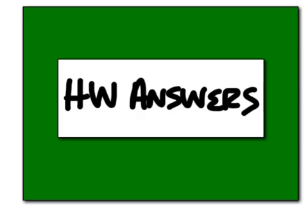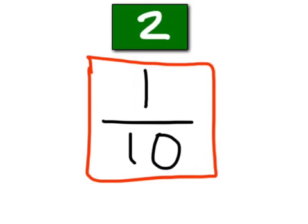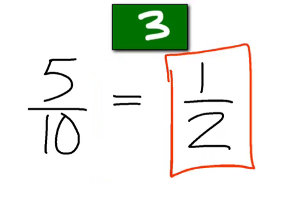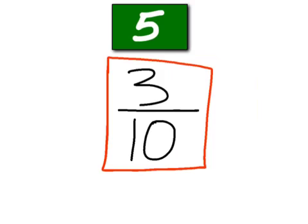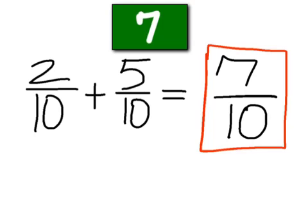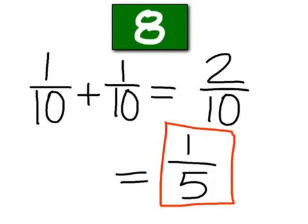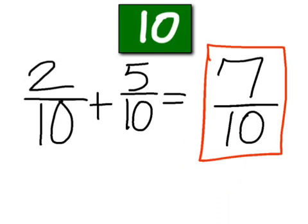Homework check will be up here. Go ahead and bring it up. Make sure you keep track of how many you have right. Number one should be 1 half. 2 should be 1 tenth. 3 should be 1 half. 4 should be 1 half. 5 should be 3 tenths. 6 should be 3 fifths. 7 should be 7 tenths. 8 should be 1 fifth. 9 should be 4 fifths. And 10 should be 7 tenths. Any questions on the homework?